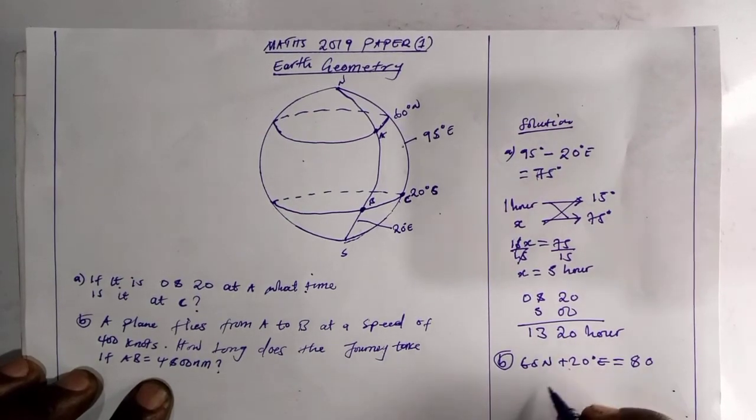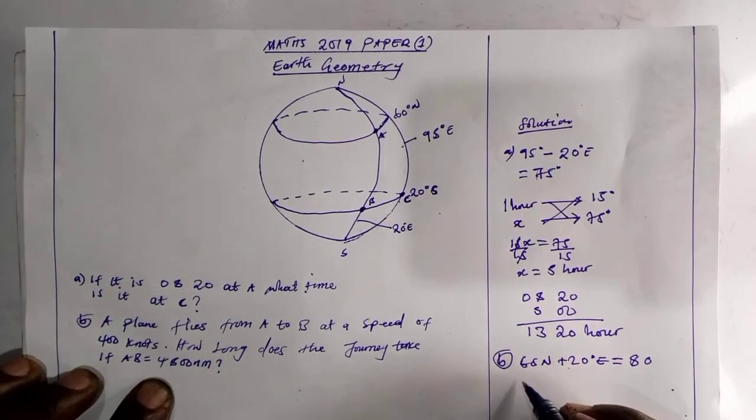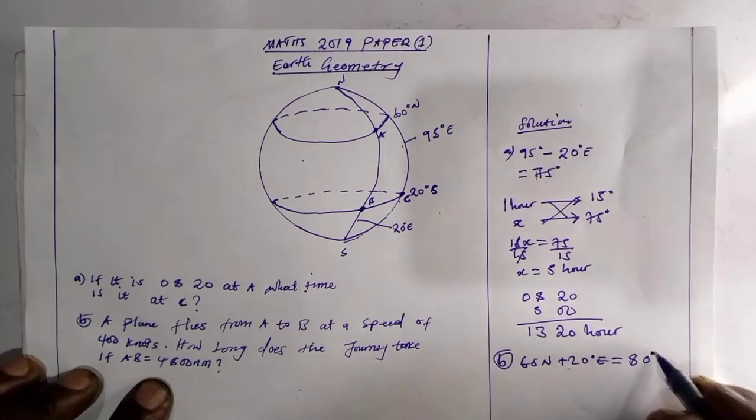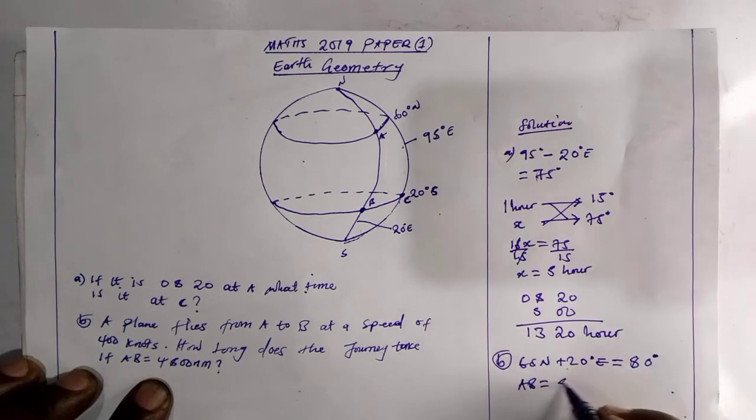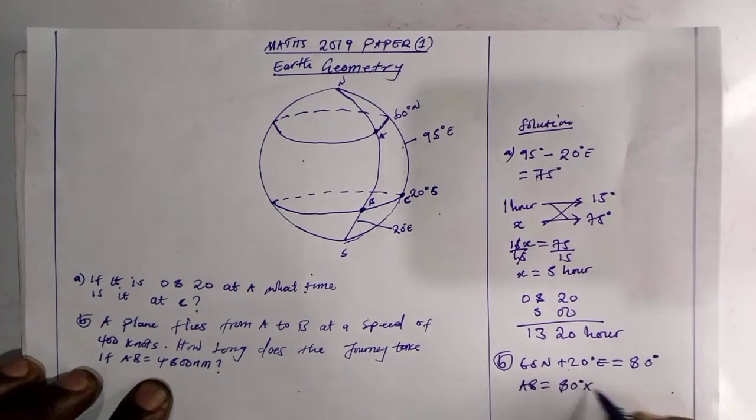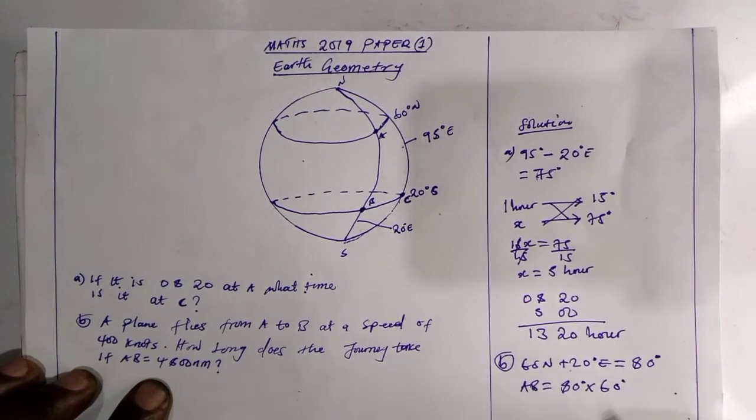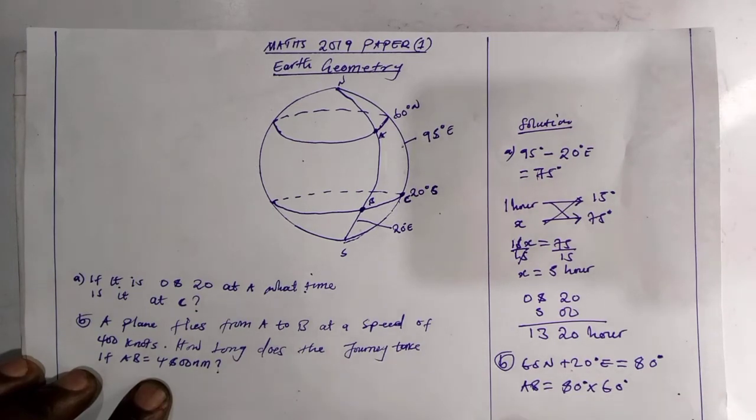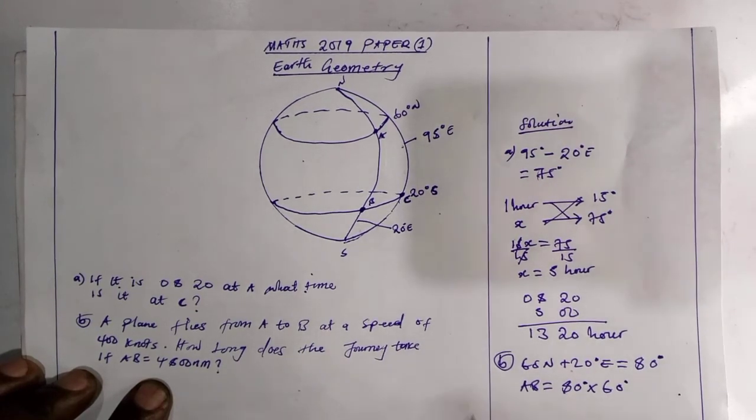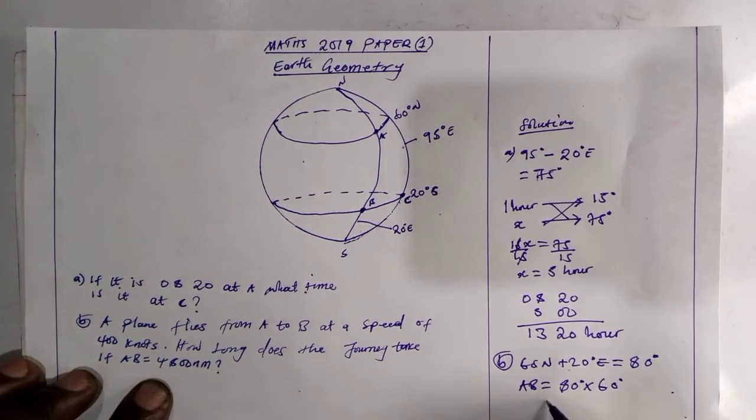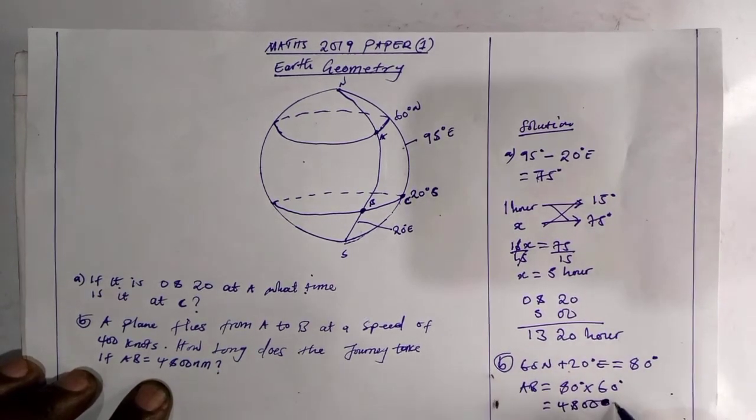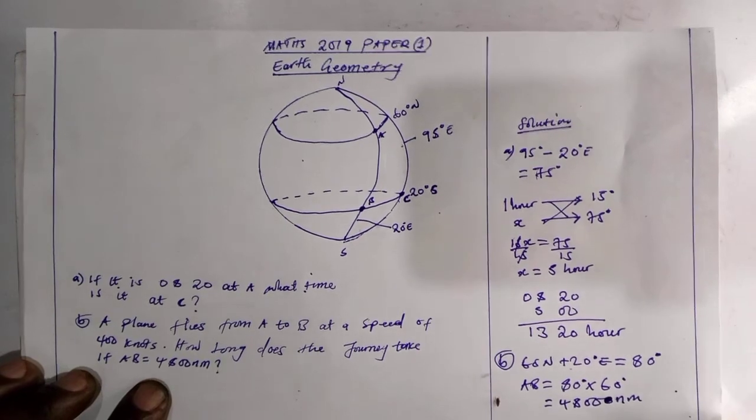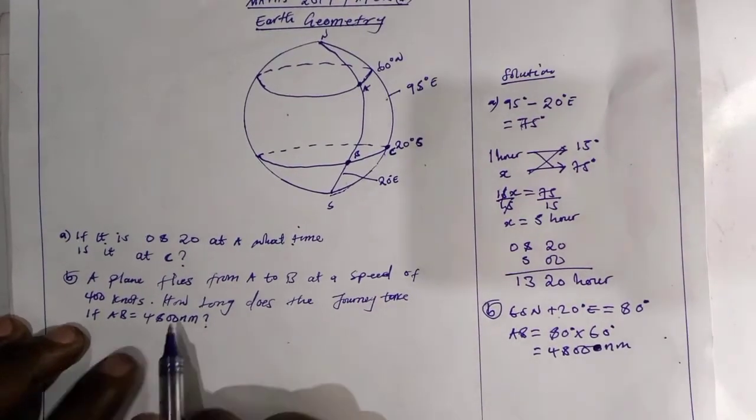So we all know that, then this degree which we have, you have to multiply it. For you to find AB, you have to multiply it, 80 degree multiplied by 60. So in which it will be equal to 4800 knots, that's how they found this distance here.